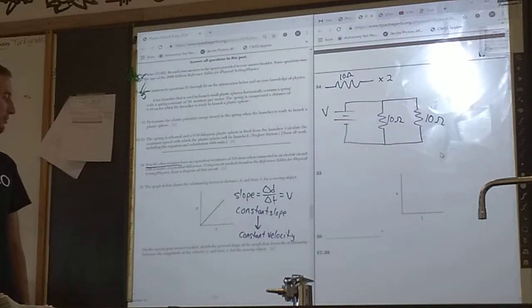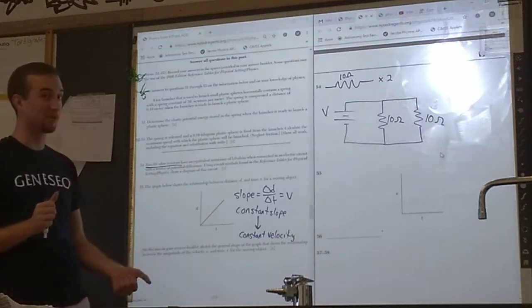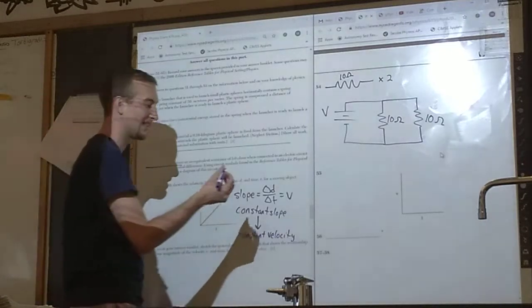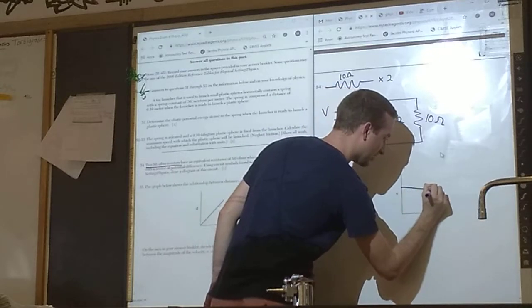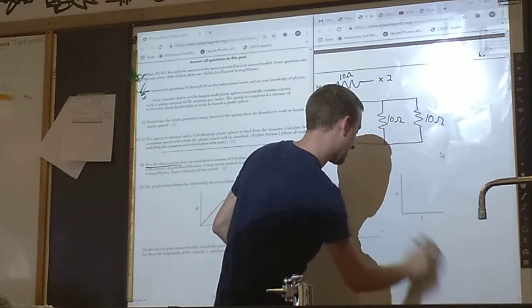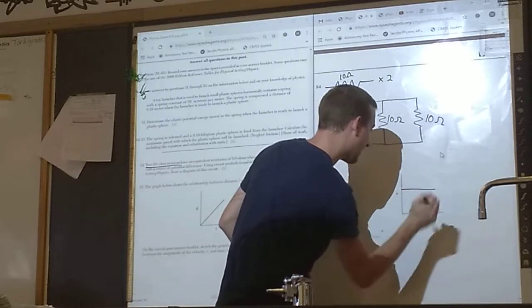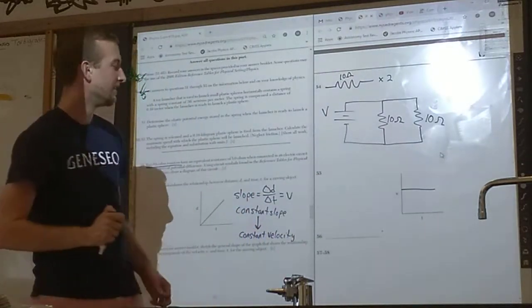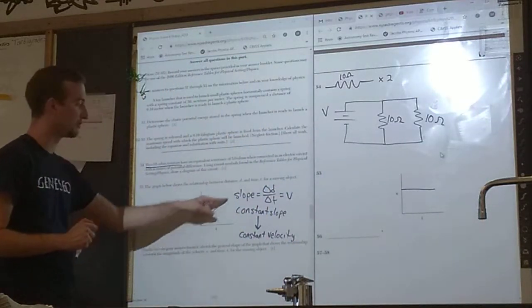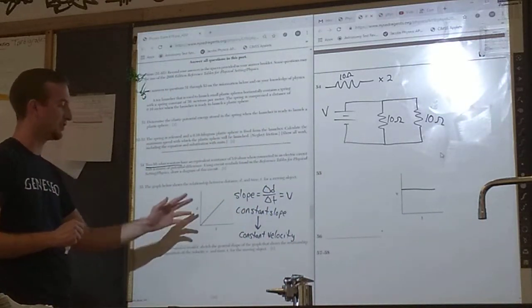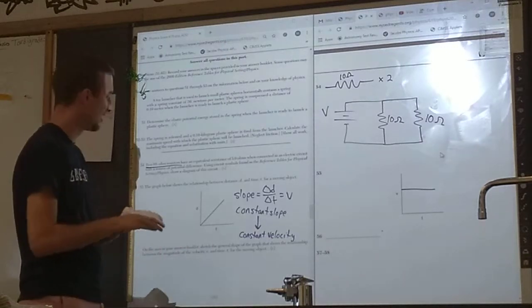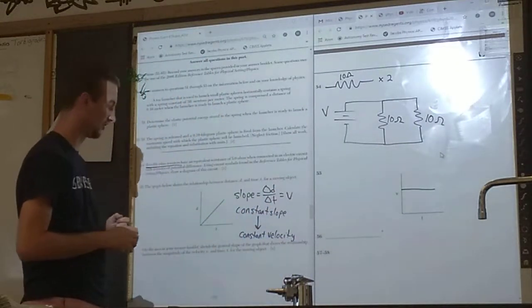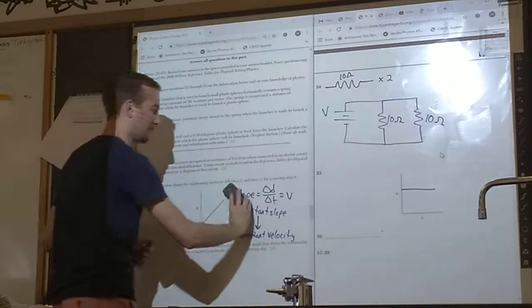On the axis in your answer booklet, sketch the general shape of the graph that shows the relationship between the magnitude of the velocity V and time T for the moving object. The constant slope here means a constant velocity. That means as we draw this, our velocity should not change. It doesn't matter where you draw it because we have no numbers, but it should be a straight, flat, no slope line. This indicates the velocity does not change as time goes on because we know the slope of this does not change. The rate at which the distance changes over time is the velocity. That rate does not change. Therefore, the velocity does not change. And the corresponding V versus T graph looks like this.